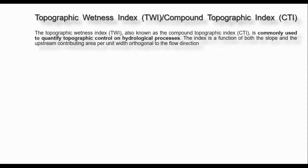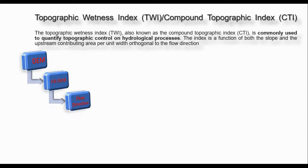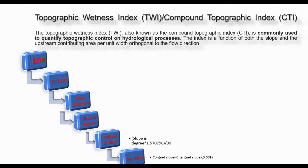The index is based on the contributing area coordinate width orthogonal to the flow direction. To prepare the Topographic Wetness Index map, you require DEM data, and it needs to be converted into a filled DEM. I am going to prepare the flow direction map and the flow accumulation map.